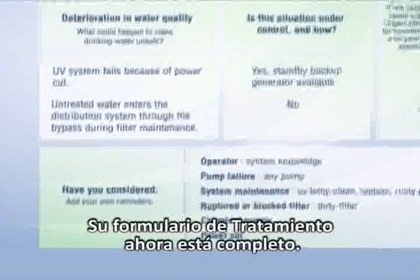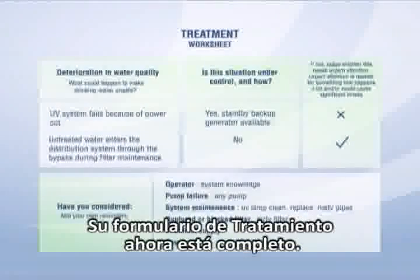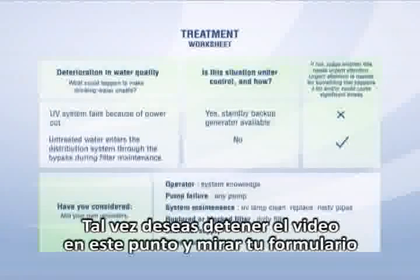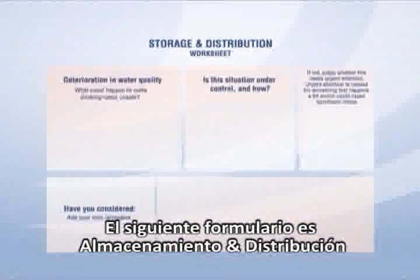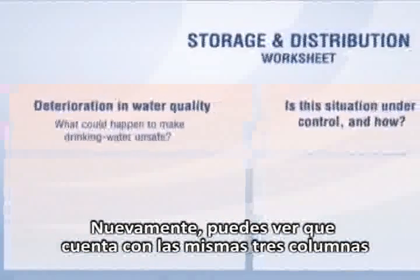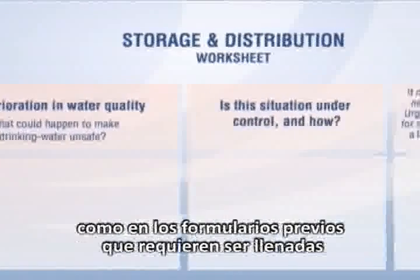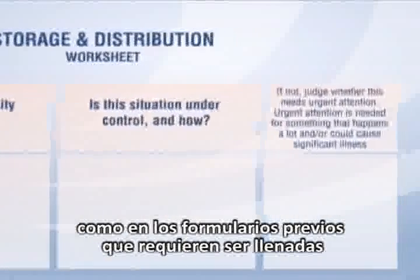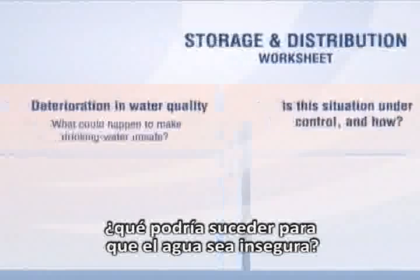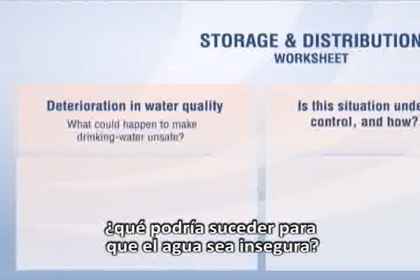Your treatment worksheet is now complete. You may want to pause the video at this stage and look at your own worksheet to make sure you understand it. The next worksheet is storage and distribution. As before, there are the same three columns as the previous worksheets which need to be filled out. The first column is what could happen to make the water unsafe.